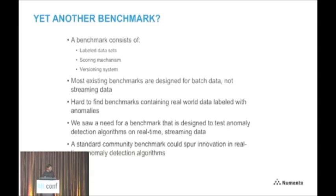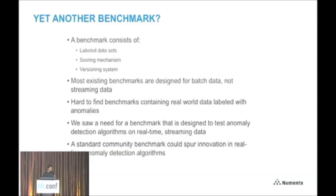Do we really need yet another benchmark? A benchmark consists of labeled data sets, a well-thought-out scoring mechanism, and a versioning system so you can compare different results. It turns out that most of the benchmarks in anomaly detection are really designed for batch data, not streaming data. We really want real-world data, and it's extremely hard to find benchmarks containing real-world data with labeled anomalies — and that combination just doesn't exist. So we saw a need for a benchmark designed to test anomaly detection algorithms on real-time streaming data, and we felt a standard community benchmark would really spur innovation.